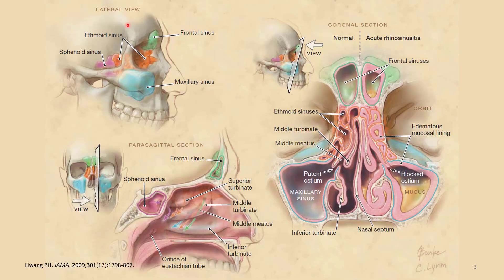The paranasal sinuses are four paired air-filled spaces located between the orbits and below the anterior cranial fossa. They are the frontal sinus, maxillary sinus, ethmoid sinus, and sphenoid sinus. Just like the rest of the respiratory tract, these sinuses are lined with ciliated secretory respiratory mucosa.